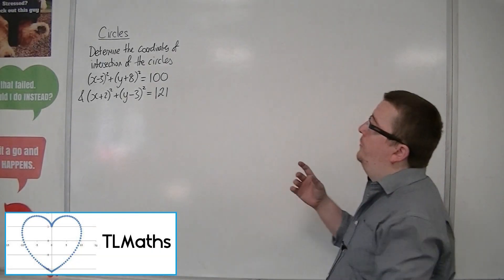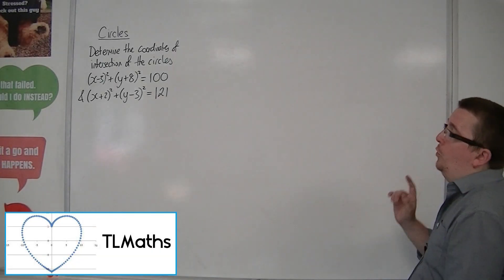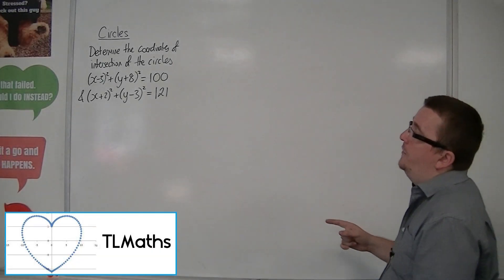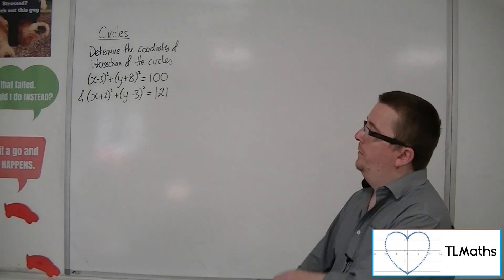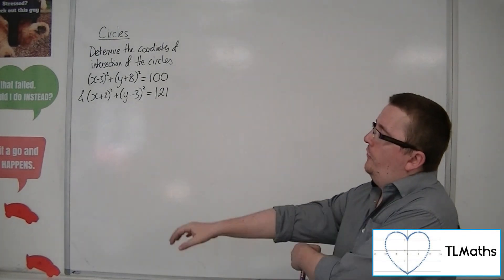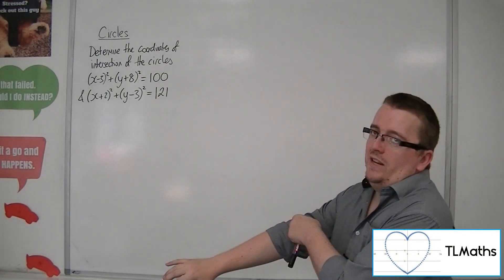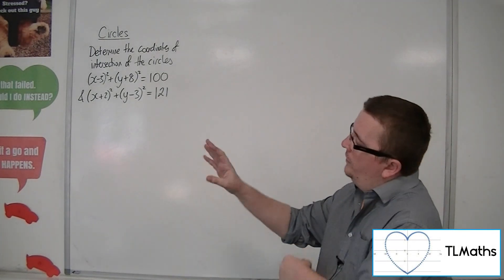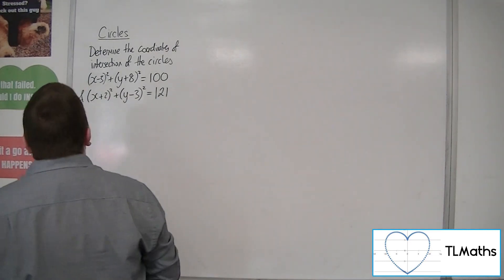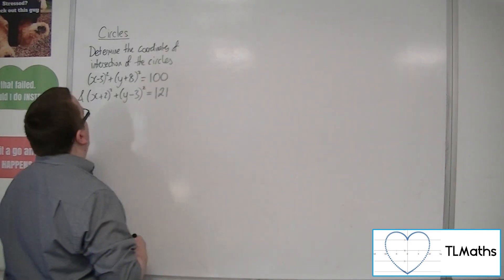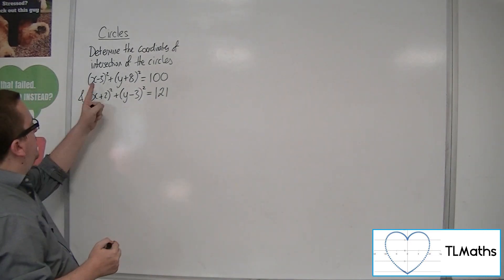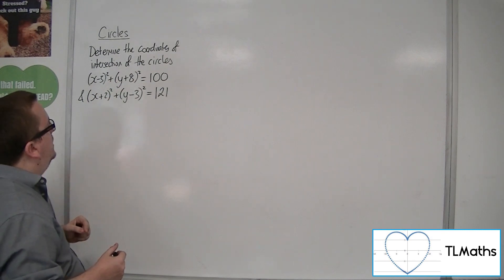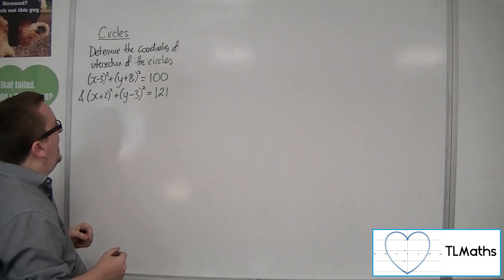Let's determine the coordinates of intersection of two circles. We've got x minus 3 squared plus y plus 8 squared, so it's got a centre of (3, −8) with a radius of 10.